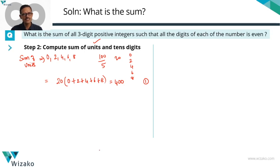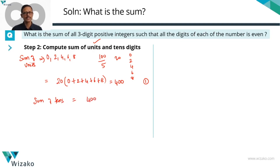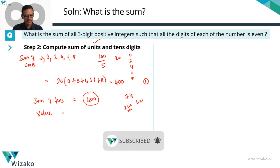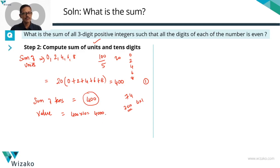The same logic applies to the tens place — all five digits {0, 2, 4, 6, 8} can appear, and we have 100 numbers, so each digit appears in 20 numbers. The sum of the tens digits is also 400. However, since these digits are in the tens place, their value is 400 × 10 = 4,000.